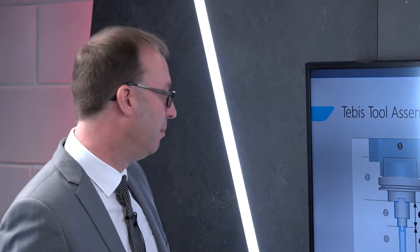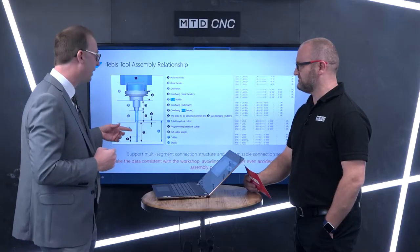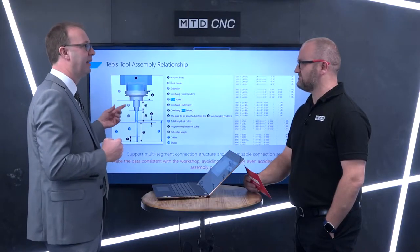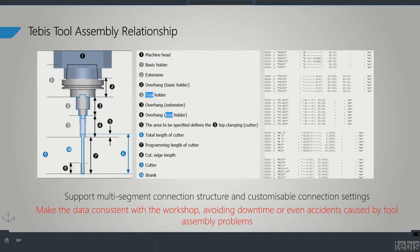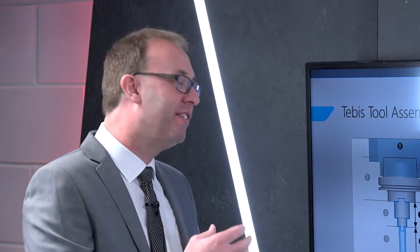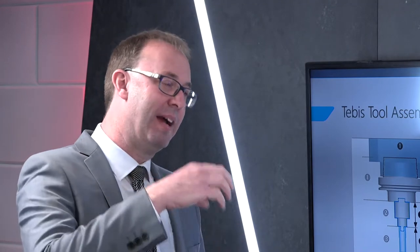Tebis is very special at that because with these cutting tools, we actually manage the connections with a set of rules. So this reflects reality — Tebis won't let you build a tool which is not able to be built in reality. Even to the extent of the back end of the tool: the tool holder is going to fit into a certain type of machine, and we can control that too.